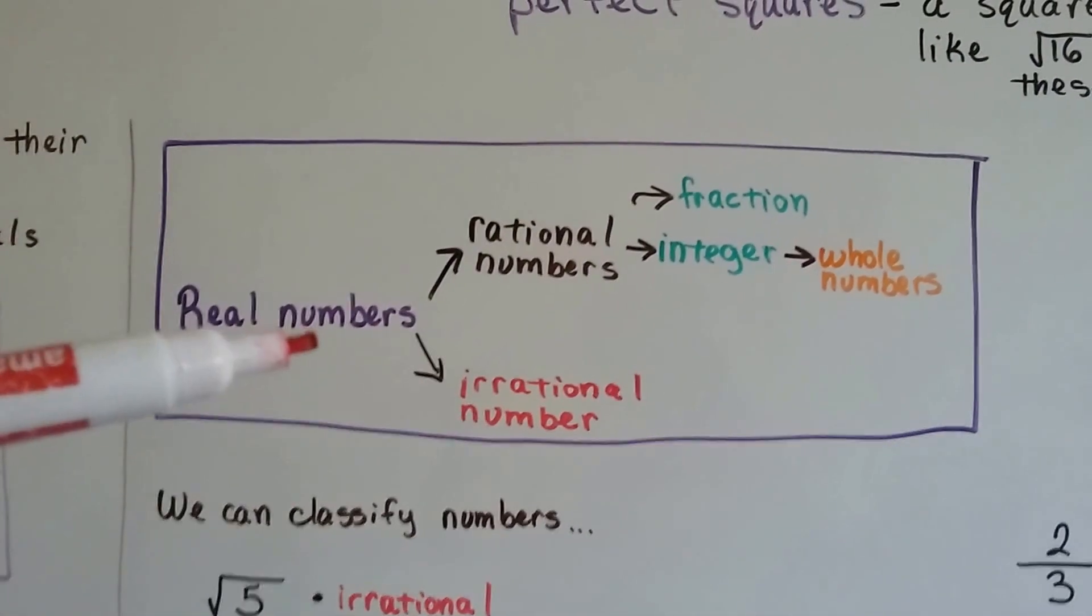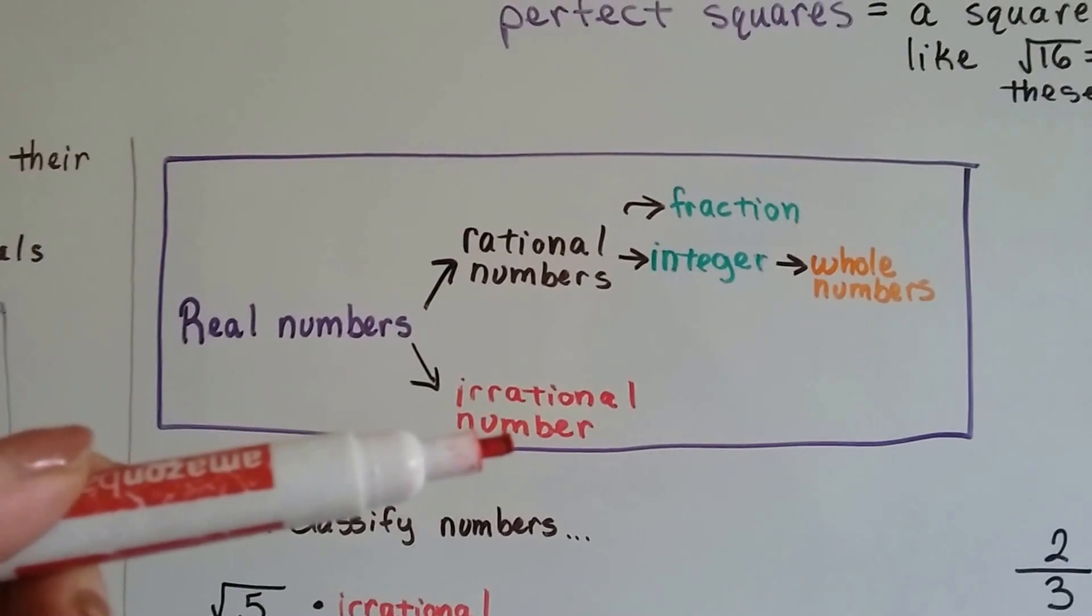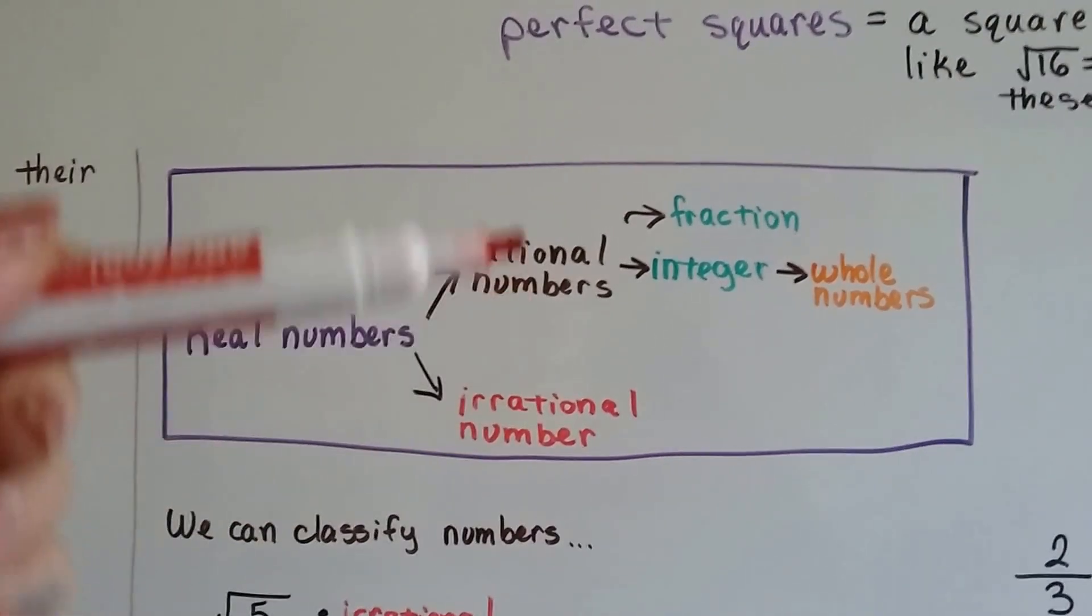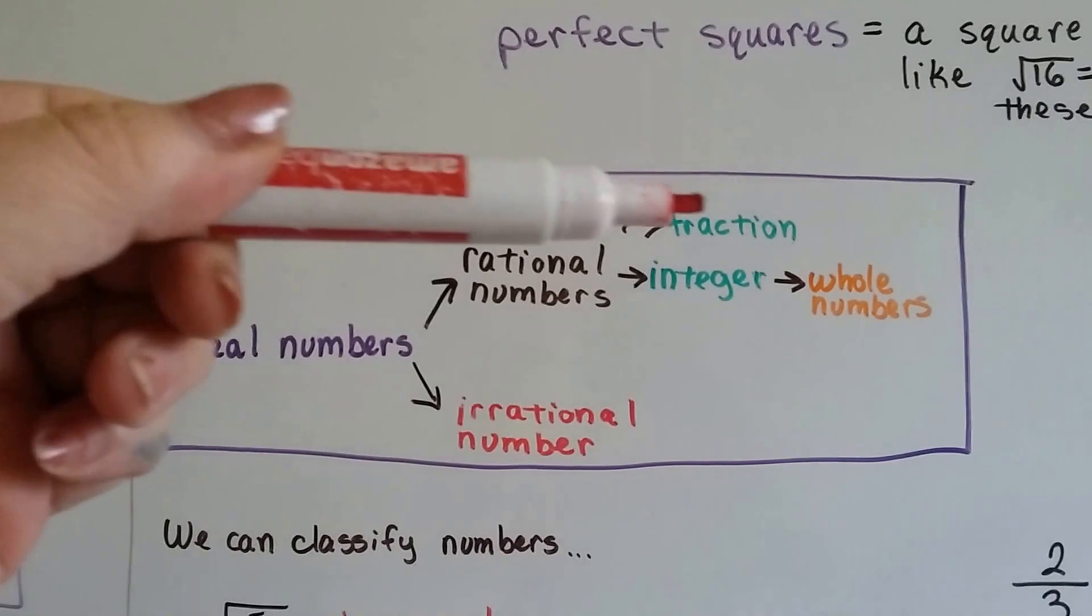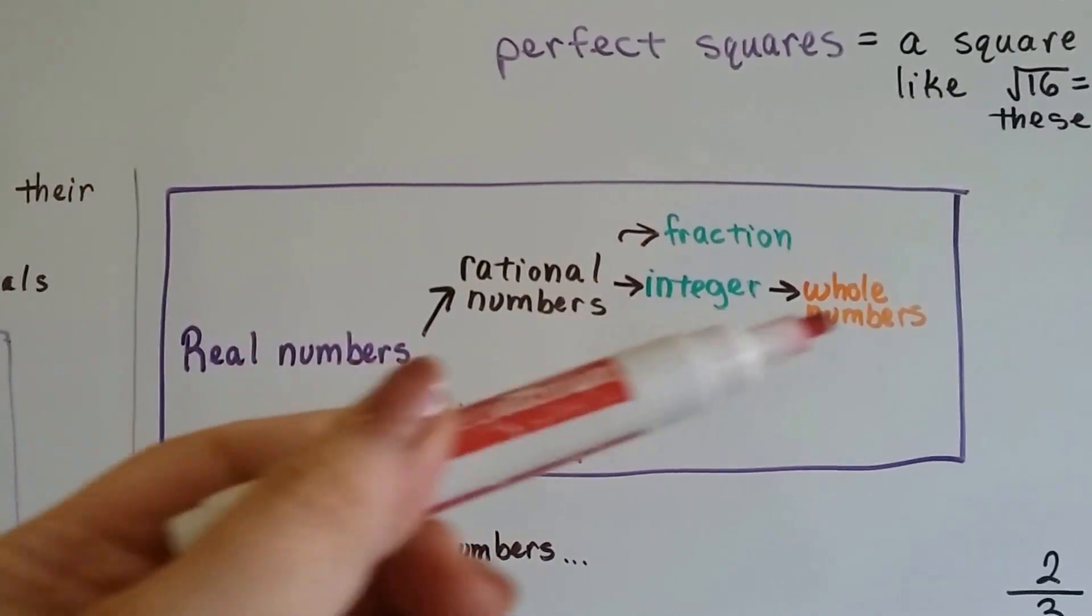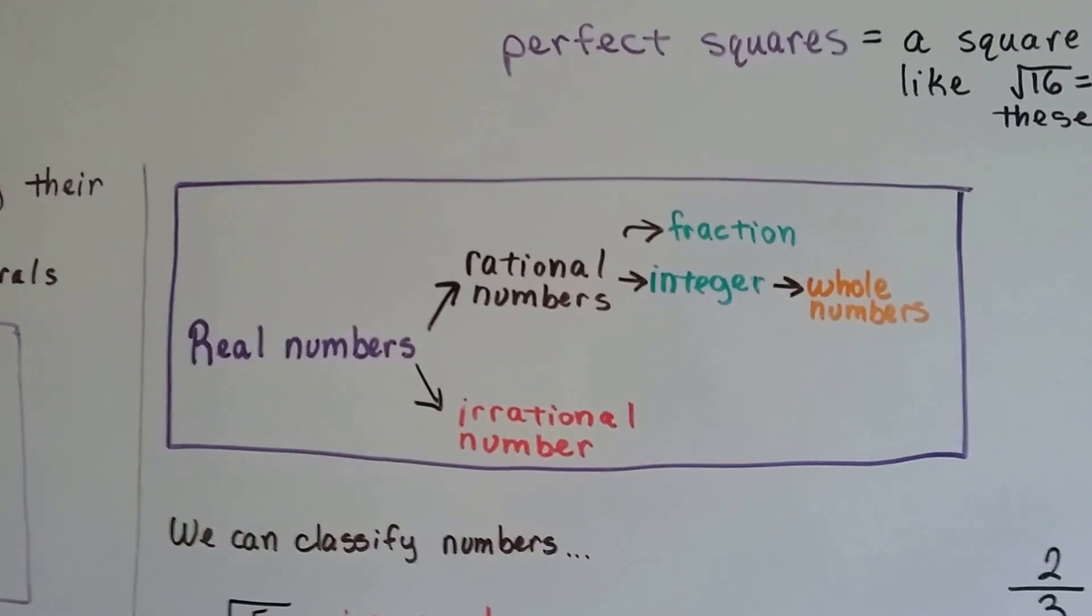So, real numbers are either rational numbers or irrational numbers. For rational numbers, they could be fractions or integers. Integers are whole numbers.